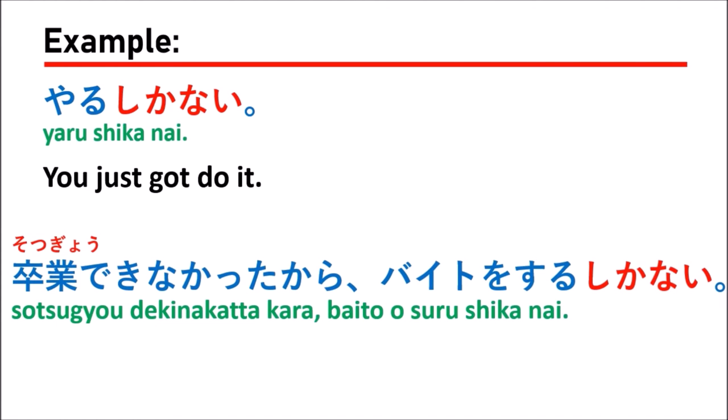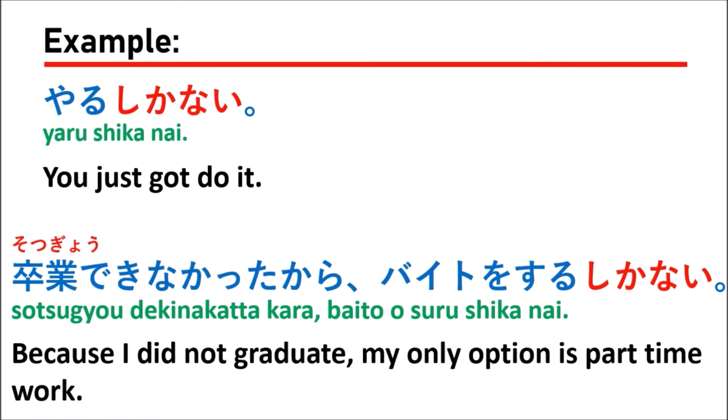The second example is: 卒業できなかったからバイトをするしかない (Sotsugyou dekinakatta kara baito wo suru shikanai). That means: because I did not graduate, my only option is part-time work. If you haven't graduated from university or college, you have to work part-time only.